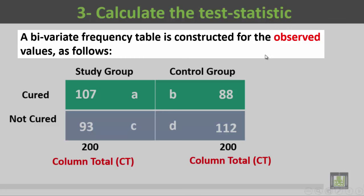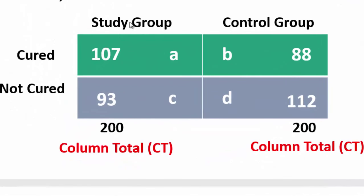A bivariate frequency table is constructed for the observed values as follows. We have a column for the study group, a total of 200. This is the column total for the first group. The second group is the control group which contained also 200 patients. So the column total of this group is 200.